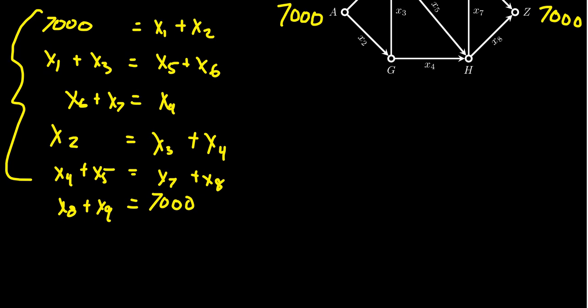And so now we have this linear system. If we were to put it in the more standard form, we like to put all of the variables on the left-hand side. So we get something like X1 plus X2 that's equal to 7,000. For the next one, we have X1 plus X3. We're going to get a minus X5 minus X6. That's now equal to 0.